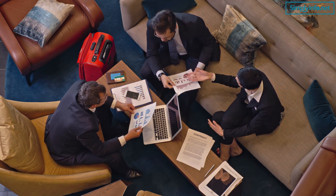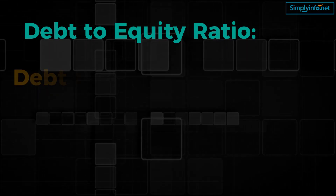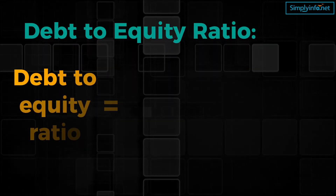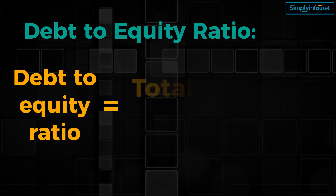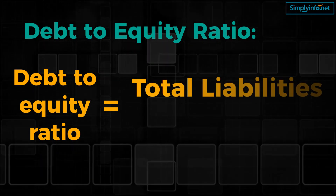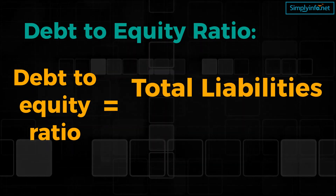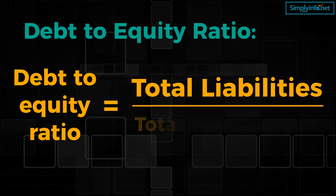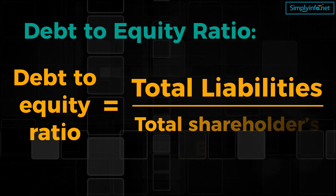The formula is: debt-to-equity ratio = total liabilities divided by total shareholders' equity.